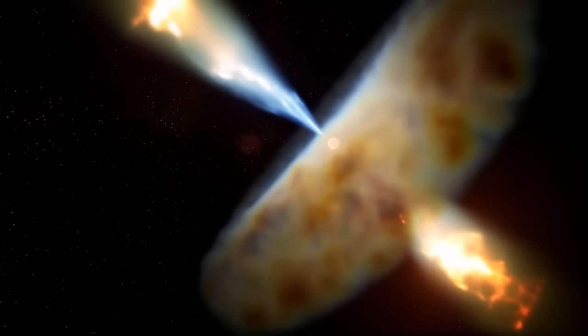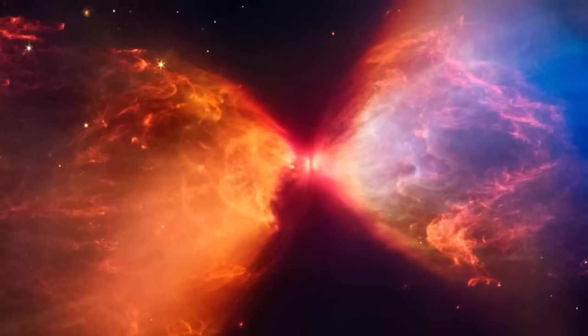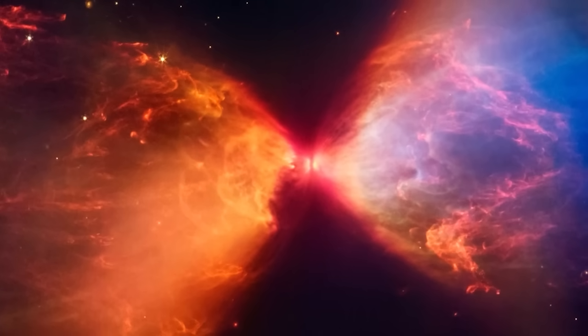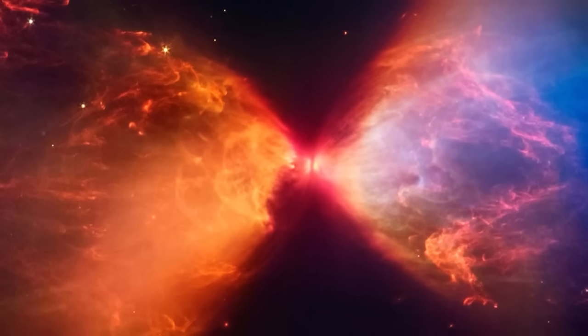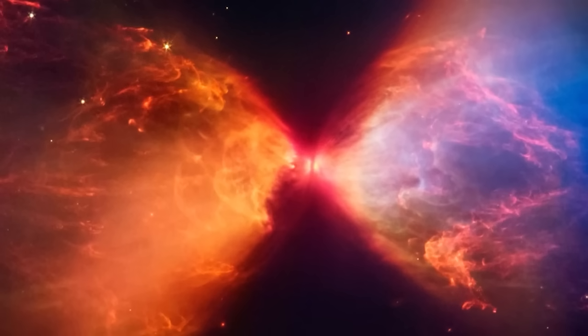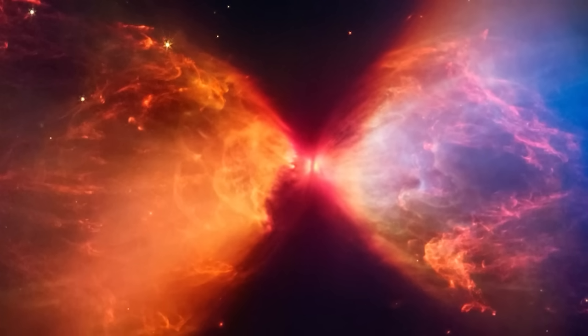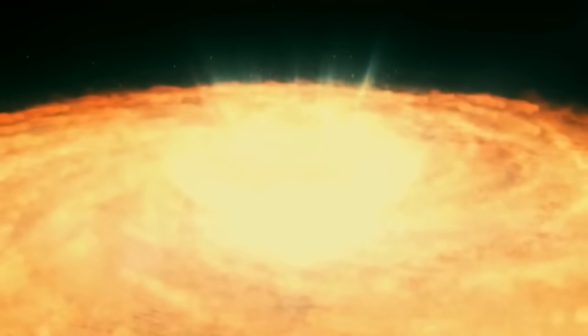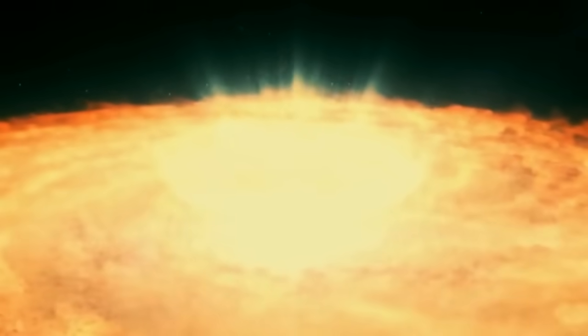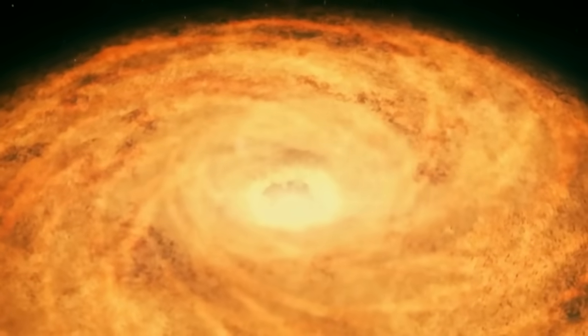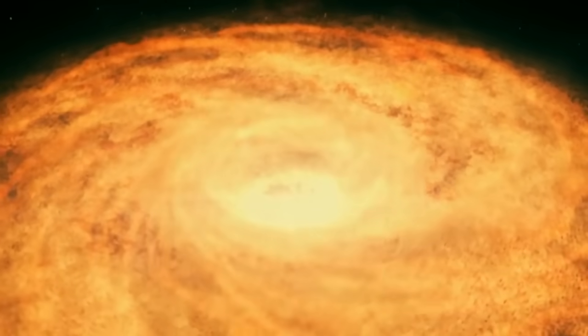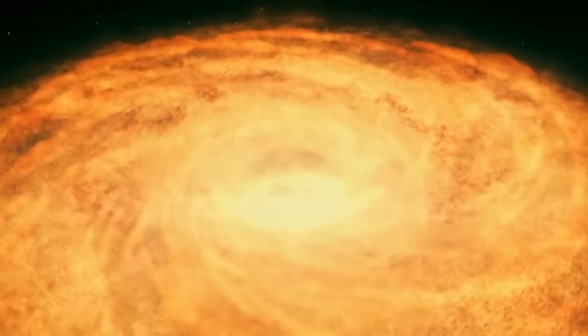According to NASA and ESA, this image of L1527 provides a window into what our Sun and Solar System looked like in their early days. For L1527 is in the earliest stage of star formation. It has not yet begun thermonuclear fusion.